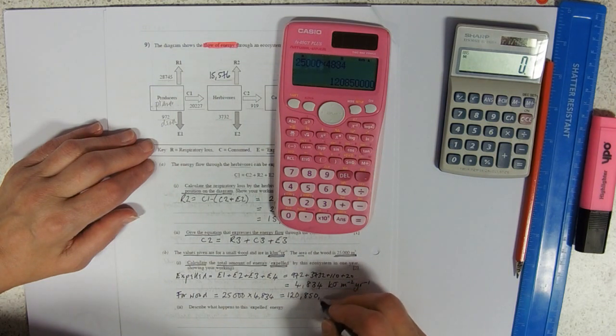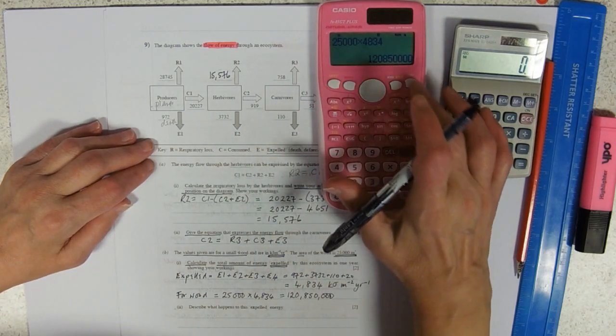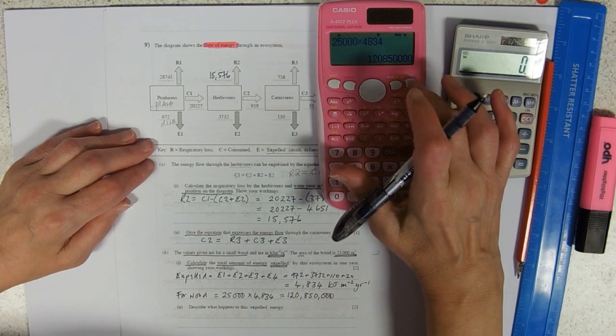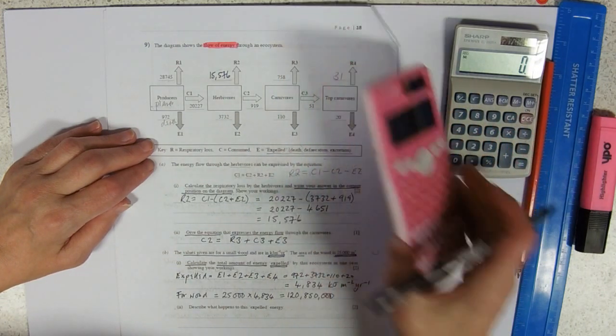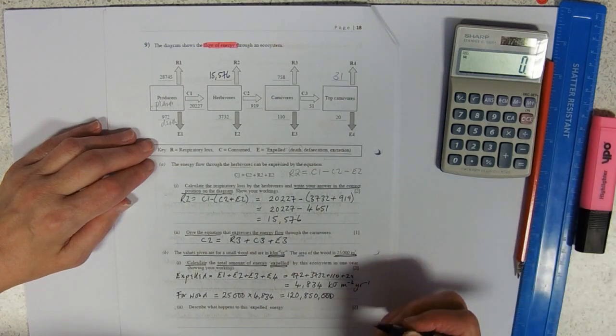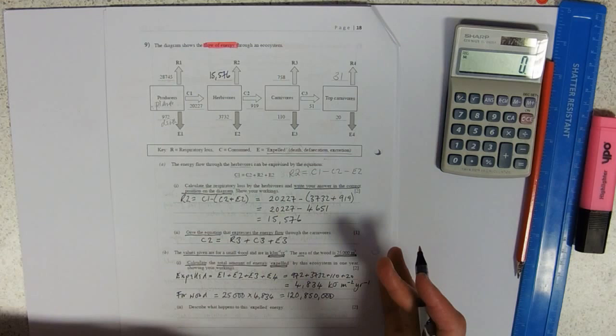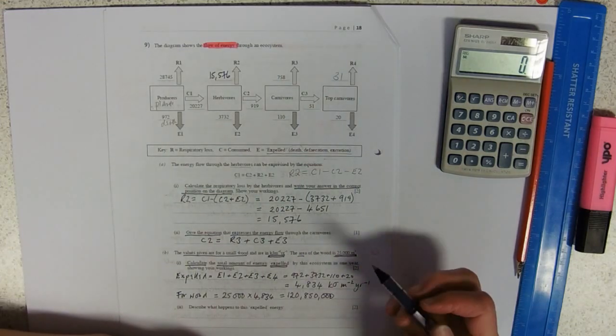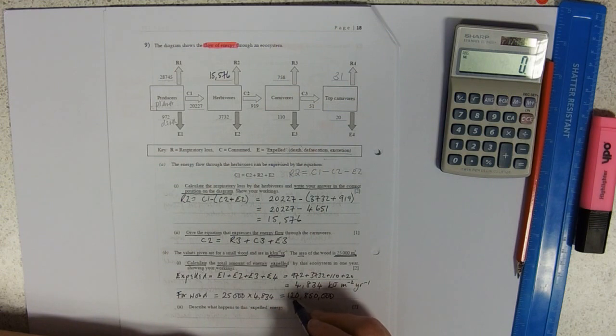And of course I could put that into standard form. And actually, chances are, should you get something like this in your exam this year because of the mathematical requirement, that's likely to be the case. In which case, standard form would be 1.2085 times...